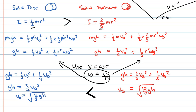Let's check if this makes sense. The solid disk had a greater moment of inertia than the solid sphere. Since inertia is a resistance to change in motion, a greater moment of inertia means greater resistance to rotational change, which is why the disk's velocity is lower at the bottom. This result is physically consistent.